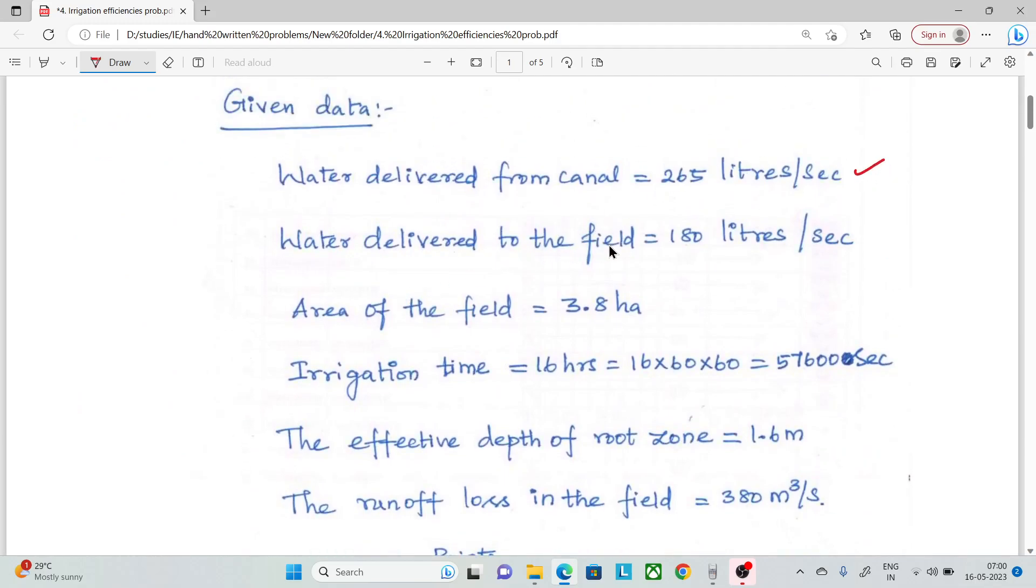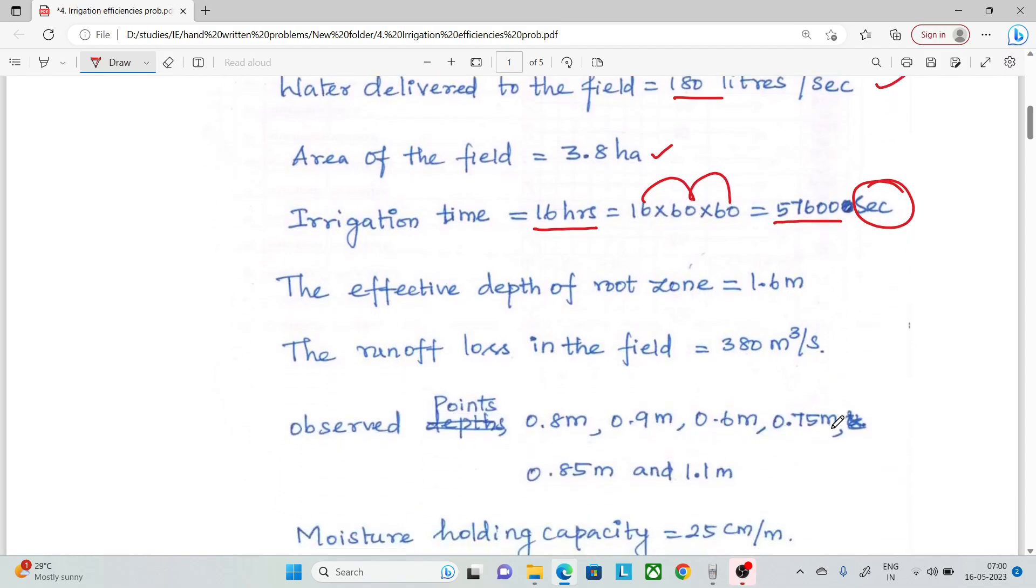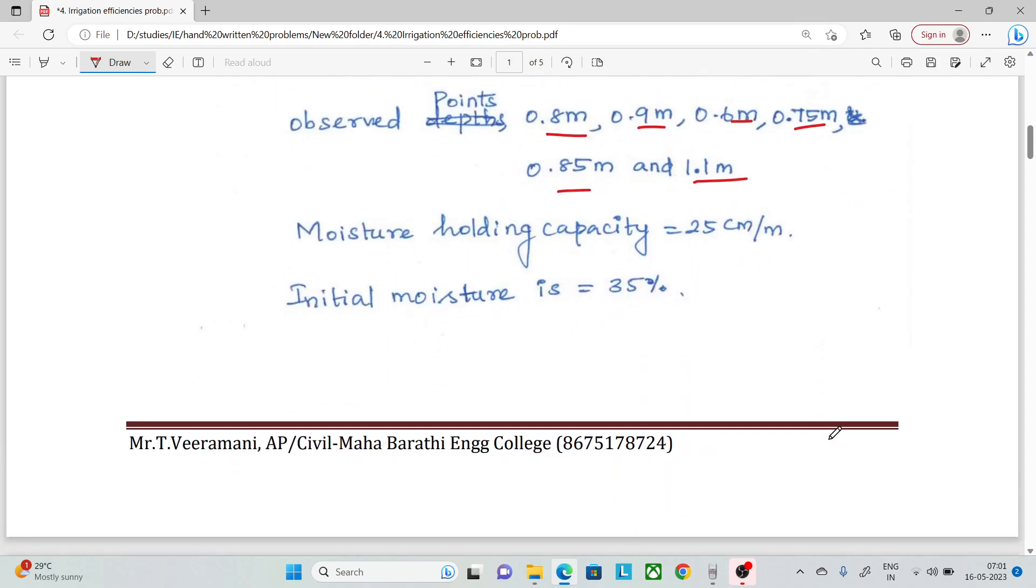Let's review the given data. Water delivered from canal is 265, to the field is 180. The area of the field is 3.8 hectares. The irrigation time is 16 hours, which is 16 × 60 × 60 = 57,600 seconds. Effective depth of the root zone is 1.6 meters. Runoff loss is 380 cubic meters. The penetration points are six values. Moisture holding capacity is 25 cm per meter and initial moisture is 35%.